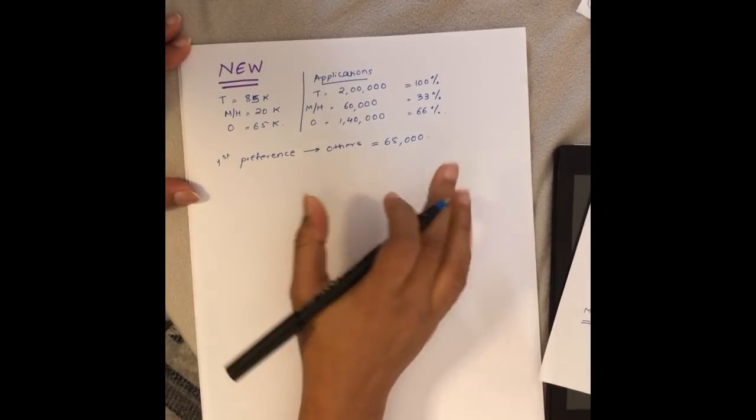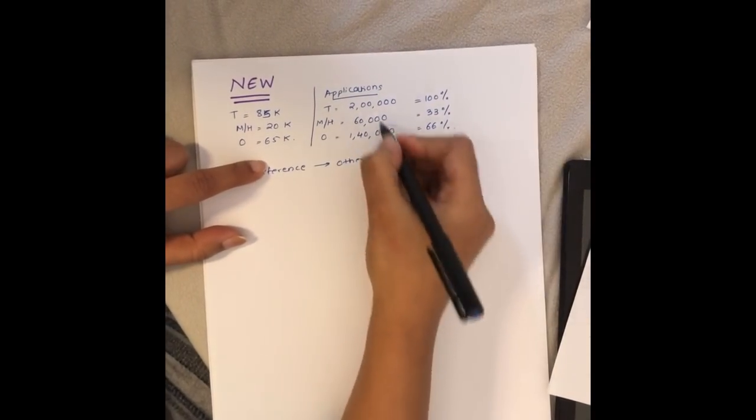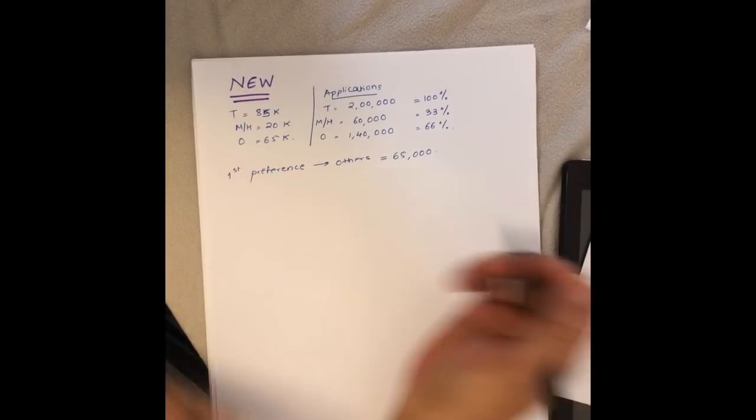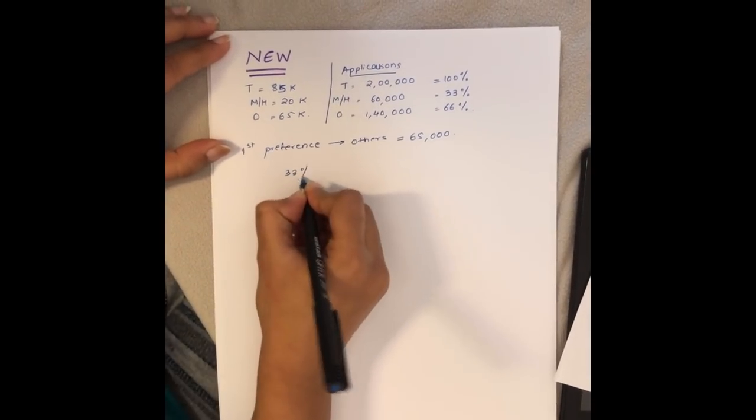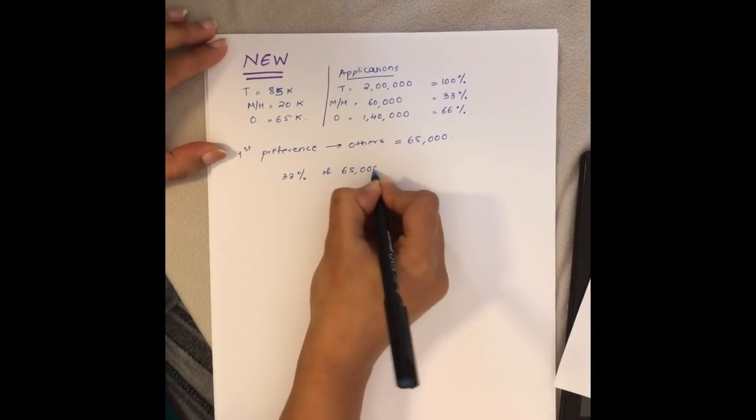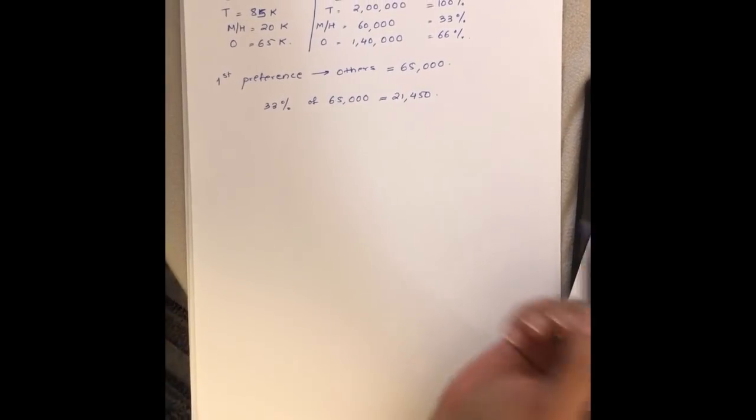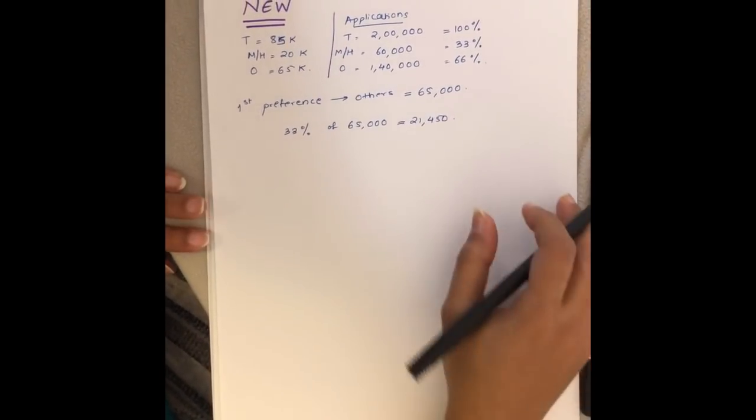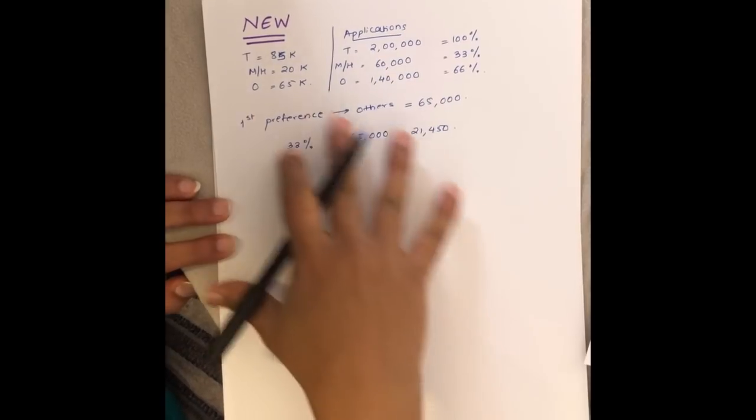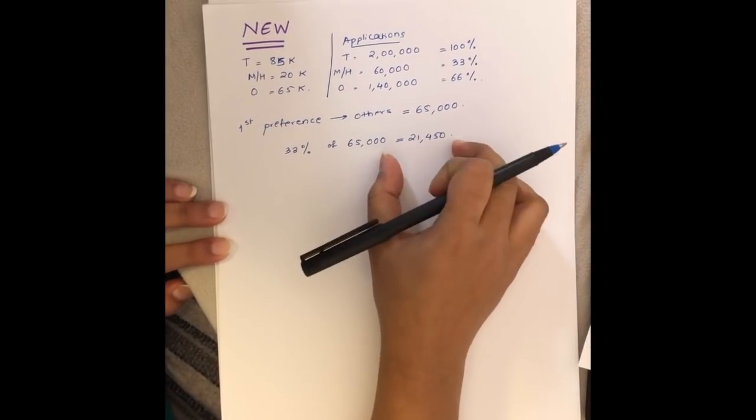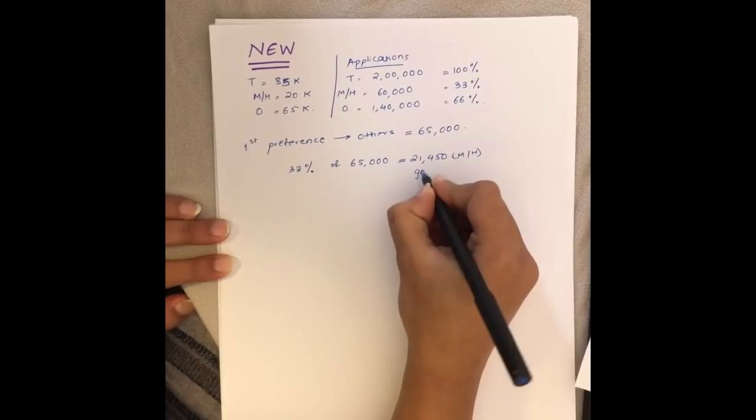Here is the change: the first preference is going to go for others, which is 65,000. We calculate in a similar way. Considering 2 lakh is 100 and masters is 33 percent, 33 percent of 65,000 is 21,450. So we estimate that 21,450 masters or higher education got H1B in this first round.